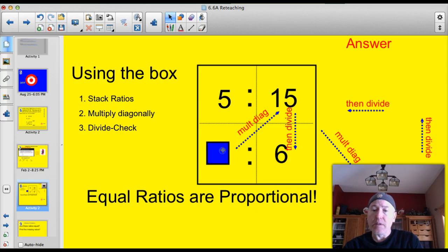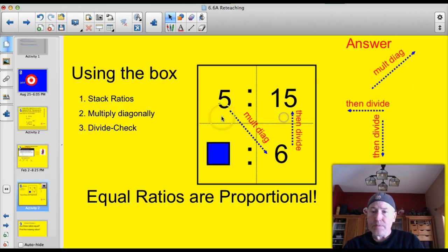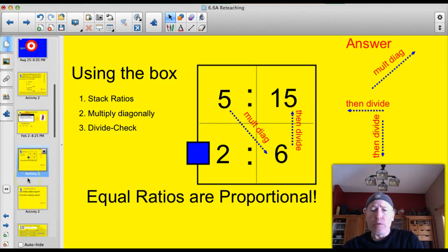You stack them and check. Just that simple. Even if this one is missing. Multiply diagonal. I can't multiply diagonally this way anymore, so I'm going to multiply diagonally this way. And then I'm going to divide the other two numbers. 5 times 6 is 30. 30 divided by 15 is 2. It's a miracle! Sorry. That was from Caddyshack. It works.